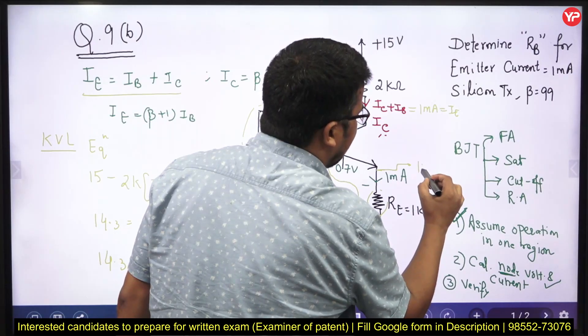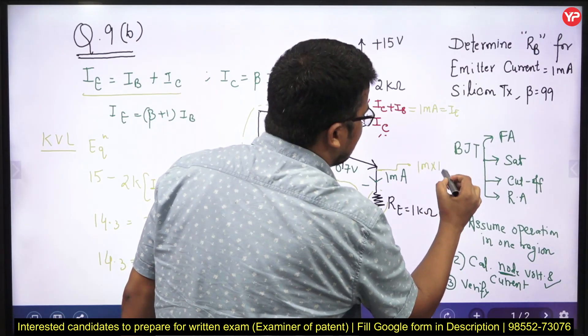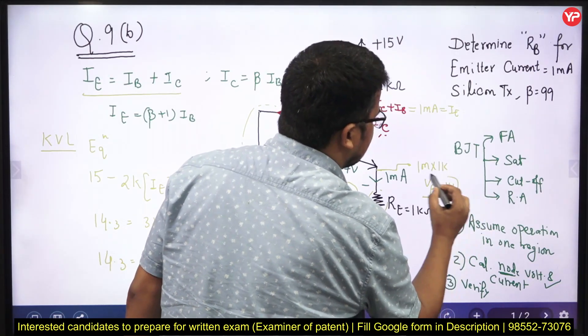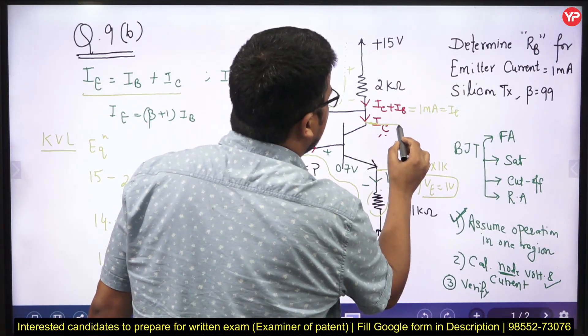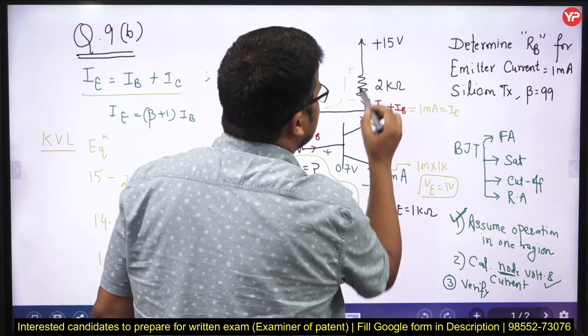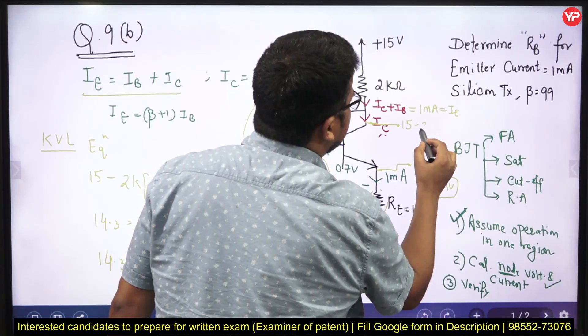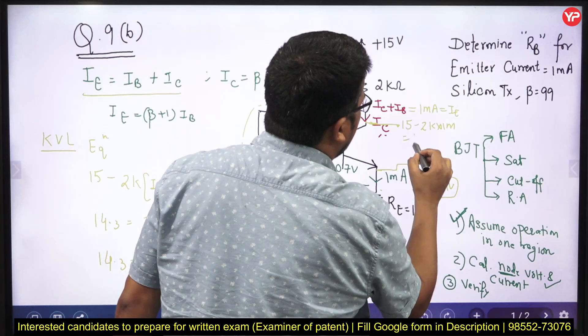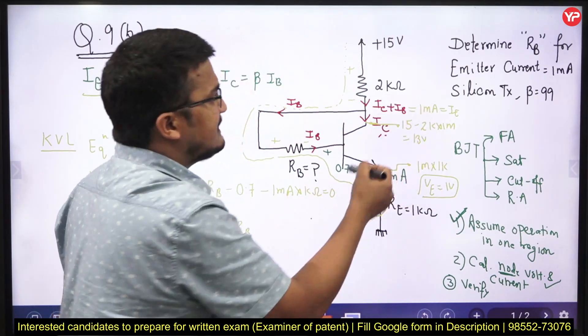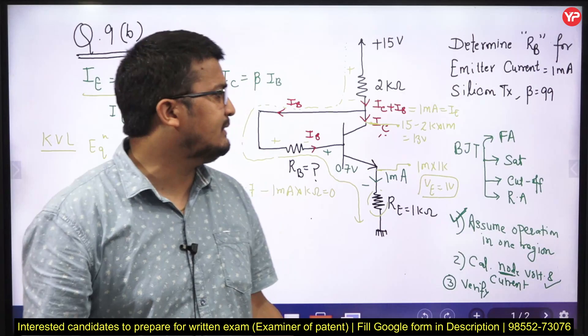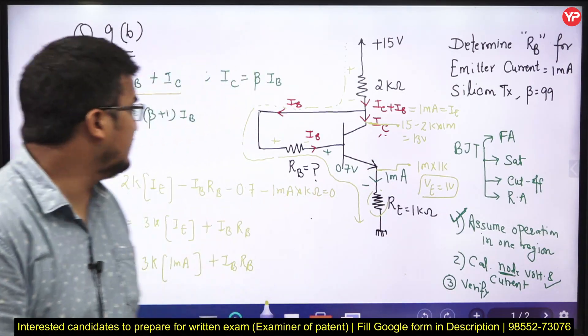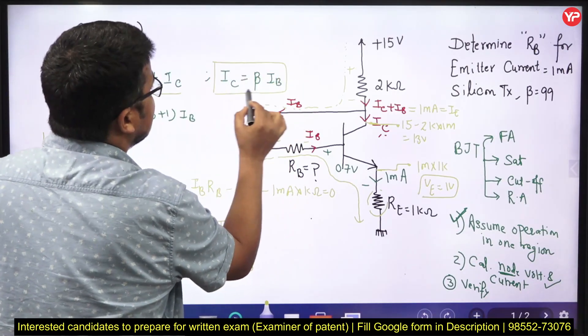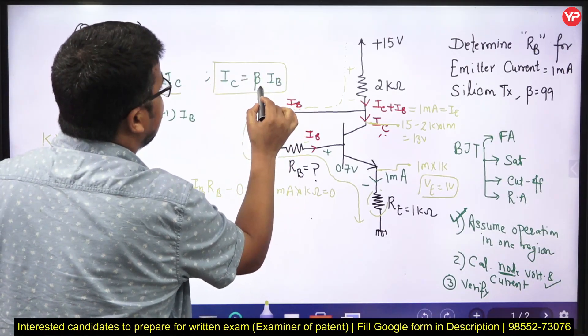What is this voltage? This will be 1 milli into 1k. Can I say V emitter is equal to 1 volt? What will be this voltage? This voltage will be equal to this minus drop across this. This will be 15 minus 2k into 1 milliampere. This is almost around 13 volt. V CE is very much greater than 0.2 volt. Ultimately, this is in the forward active mode. It means what all relations I had used, these relations.